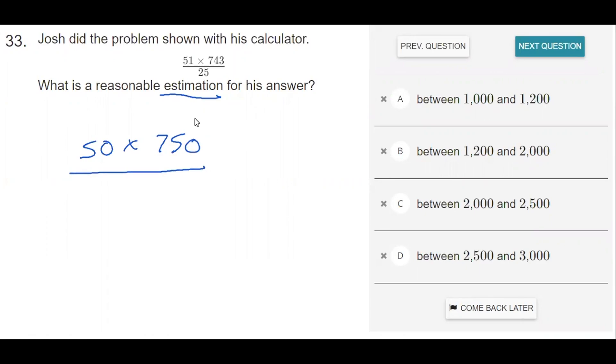And the denominator, I could round it up to 30 or down to 20, but actually 25 is a really good number to use because we have 50 in the numerator and 25 in the denominator. So I can do 50 divided by 25 first.